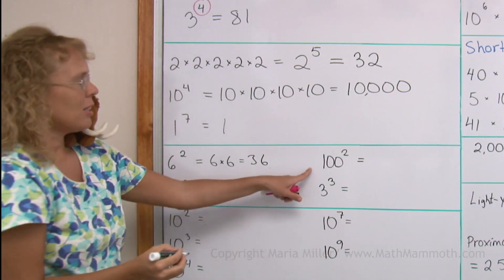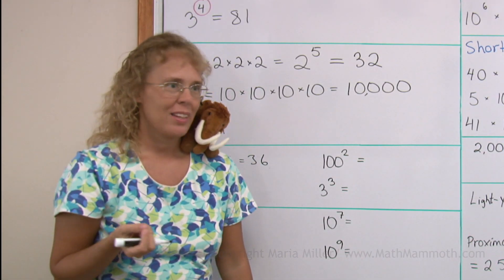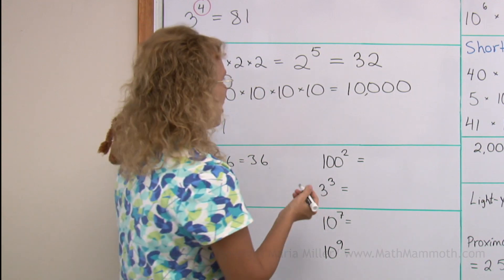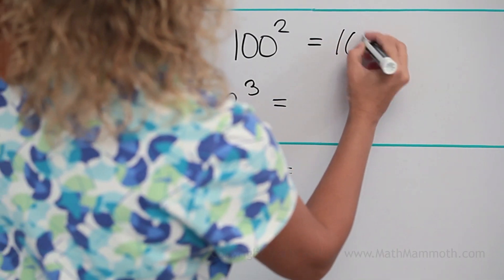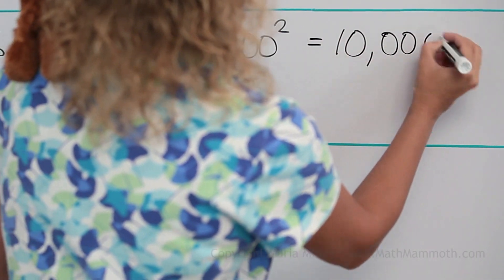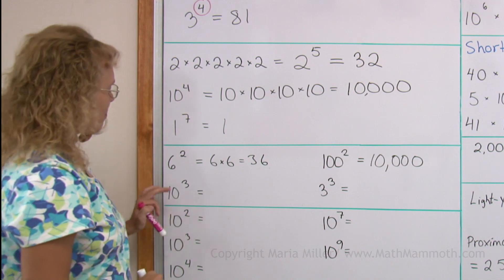How about 100 squared? That's 100 times 100 — we just had it, it's the same 10,000.